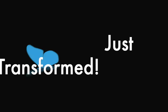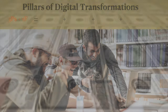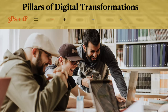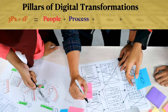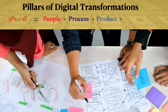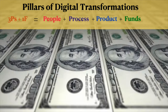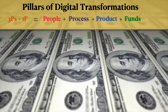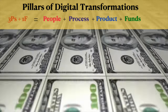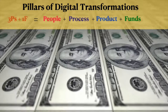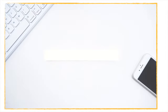In order for digital transformation to work, there are three pillars — I call it the three P's plus one F: the People, Processes, Product, and the Funding needed to keep these projects going.